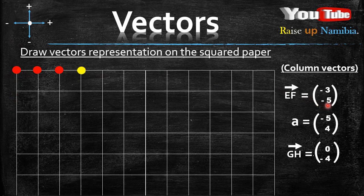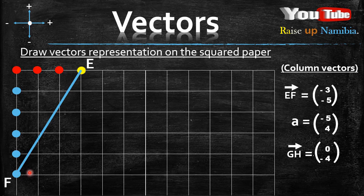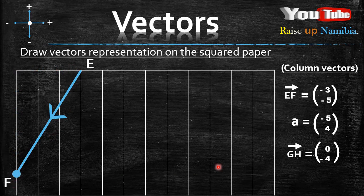Now from here we focus on the y-axis. What are we given for the y-axis? We are given a negative 5, so we'll move five lines downwards — downwards because it's a negative 5. Let's count: one, two, three, four, five. From there we draw a line from our starting point to our end point, then we label our vector and the direction. Just like that we are done with EF.